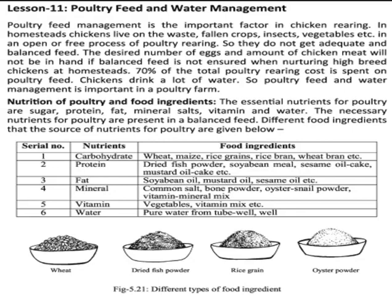Fault to Fit Management is an important factor in the second variant. If you want to rear up the seconds, we'll have to maintain the fault to fit management. These are the most important things. If we fit them properly then we'll get more good results. In home estates, they can lie on the waste and fallen crops, insects and vegetables, etc. In an often or free process of faulty rearing, they don't get adequate and balanced feed.